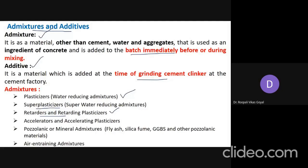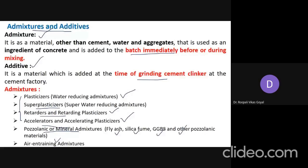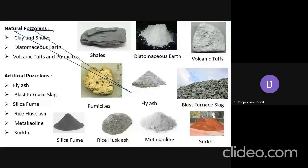We have discussed in Part 1 the plasticizers, which are water-reducing admixtures. Super plasticizers are super water reducers. Retarders are used for retarding the effect of hydration. Accelerators are used to achieve very high strength concrete in a short time. Today we are going to focus on pozzolanic or mineral admixtures, specifically silica fume, fly ash, GGBS, and air-entraining admixtures.